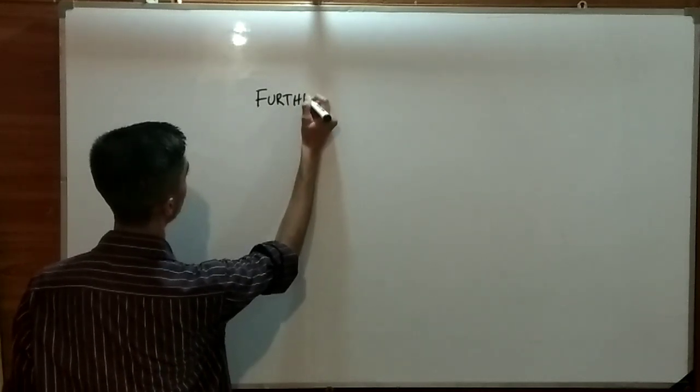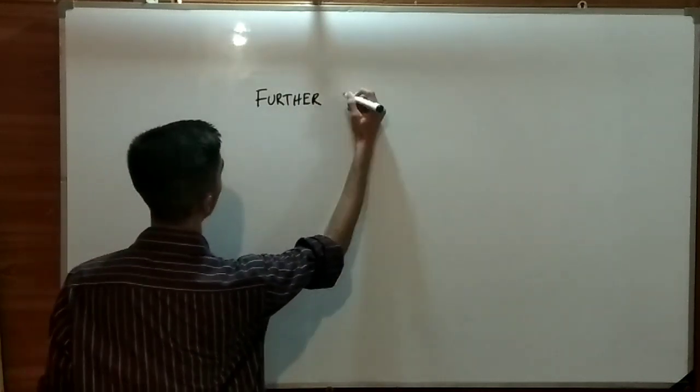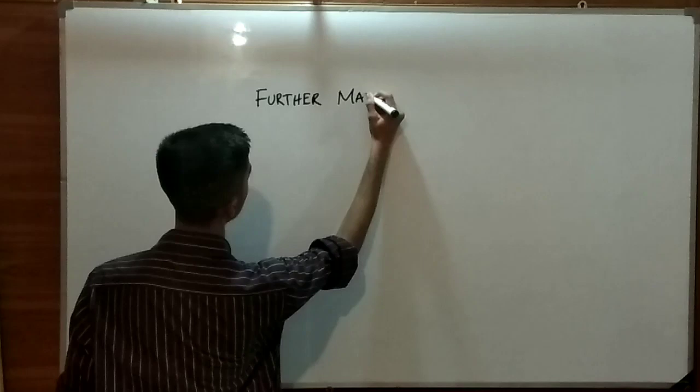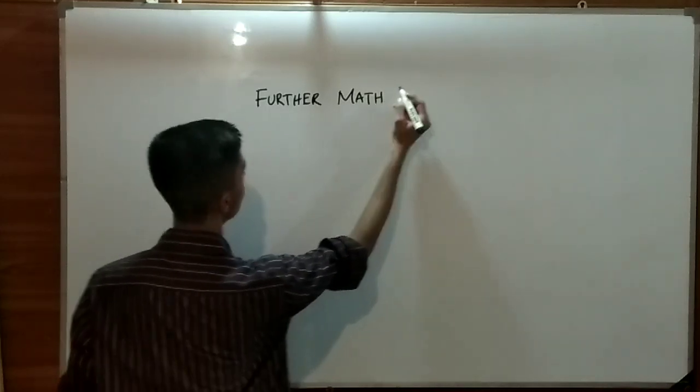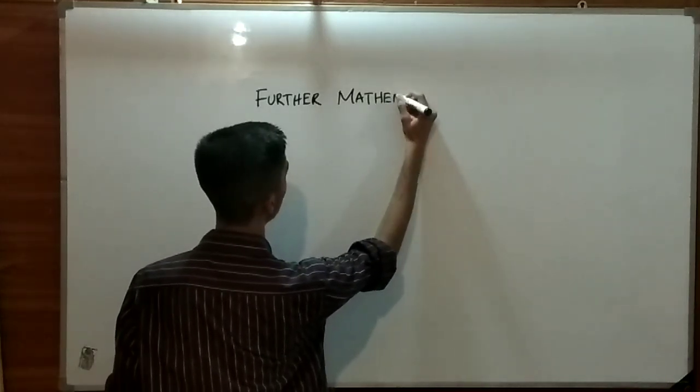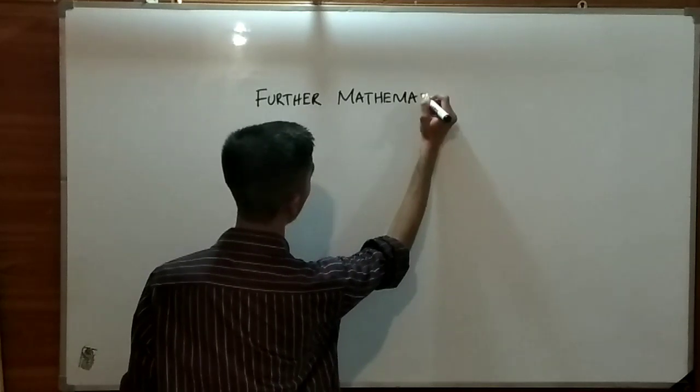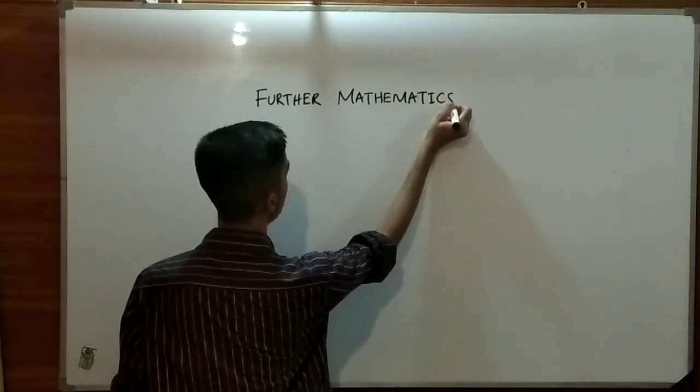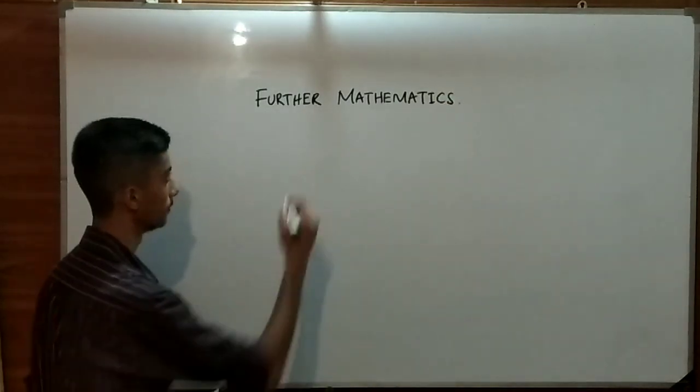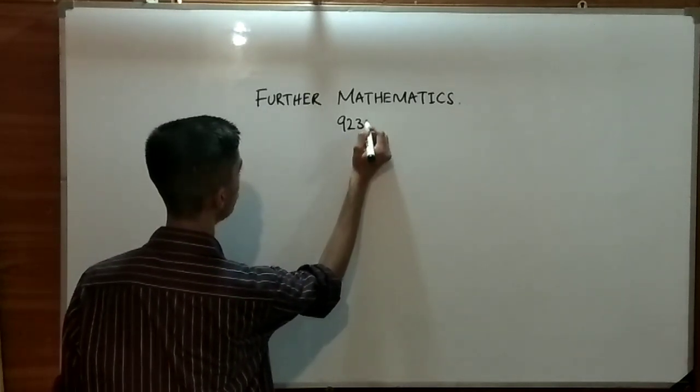Today's class is just about introduction regarding the further mathematics topics, its new paper's content that has been starting from May June 2020 and little easiness in this subject. The code of further mathematics is 9231.